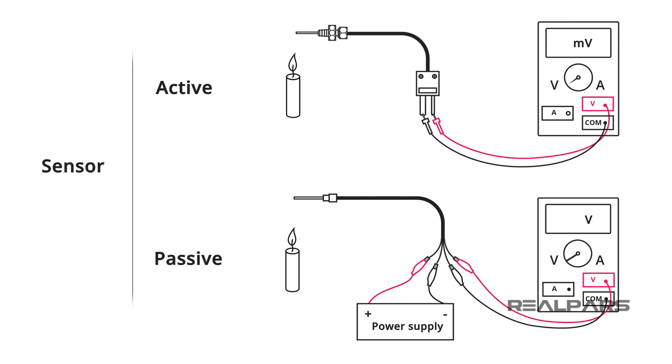From a process control perspective, we can classify sensors as either passive or active. A passive sensor requires an external source of power to operate, while an active sensor does not.